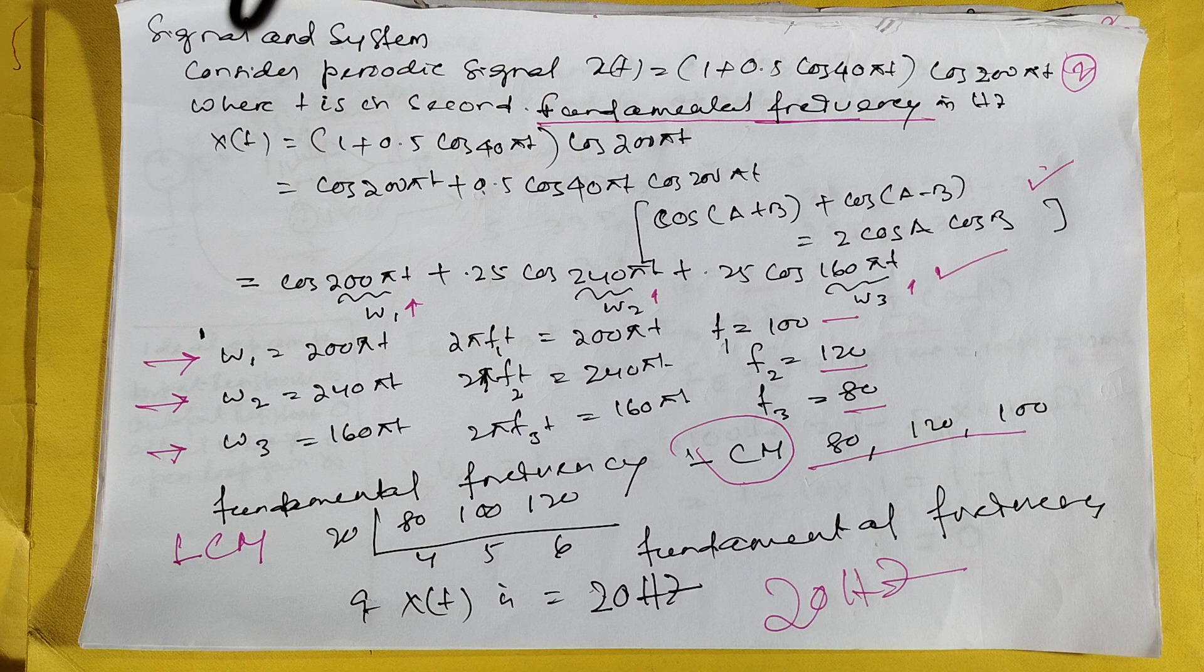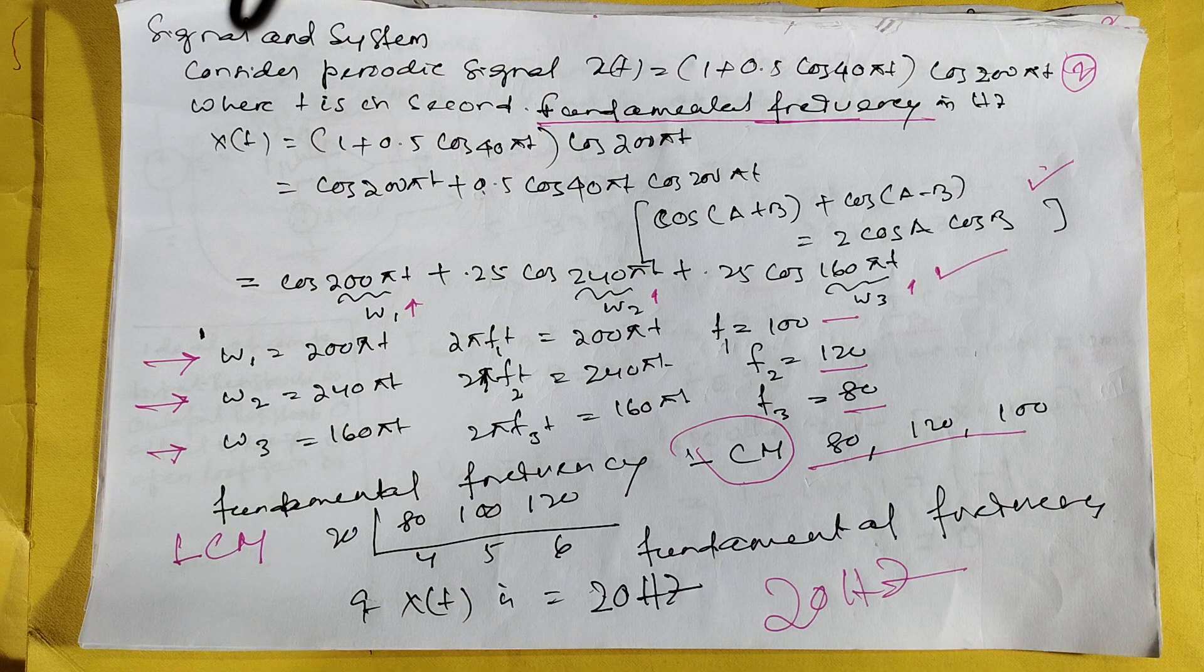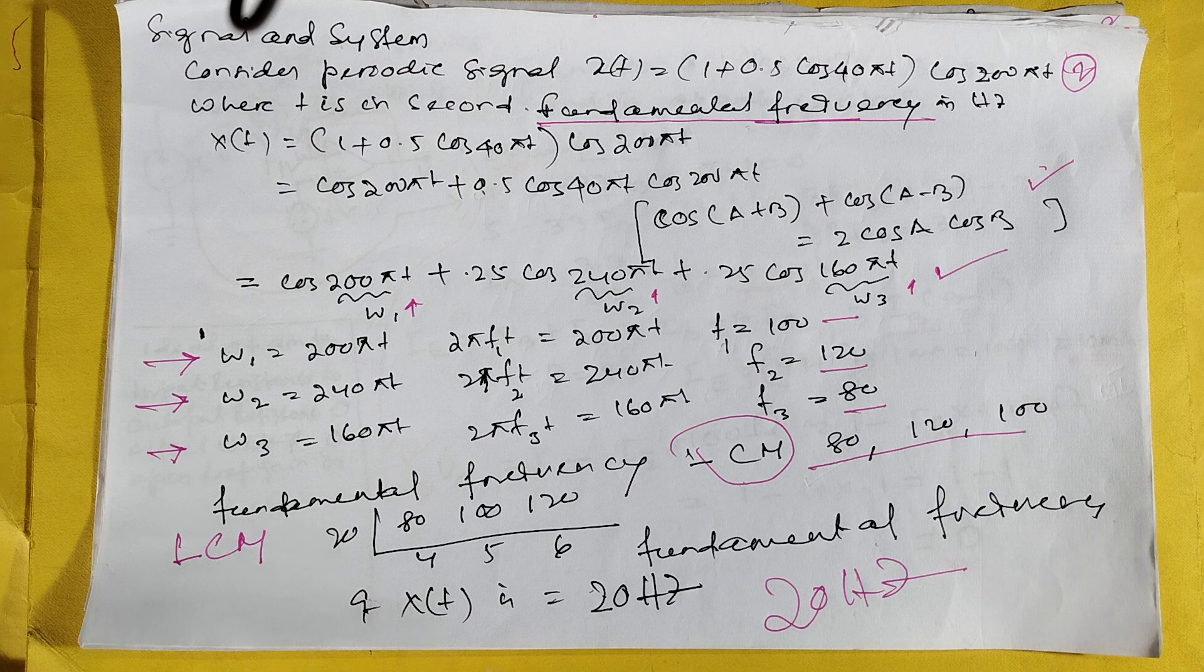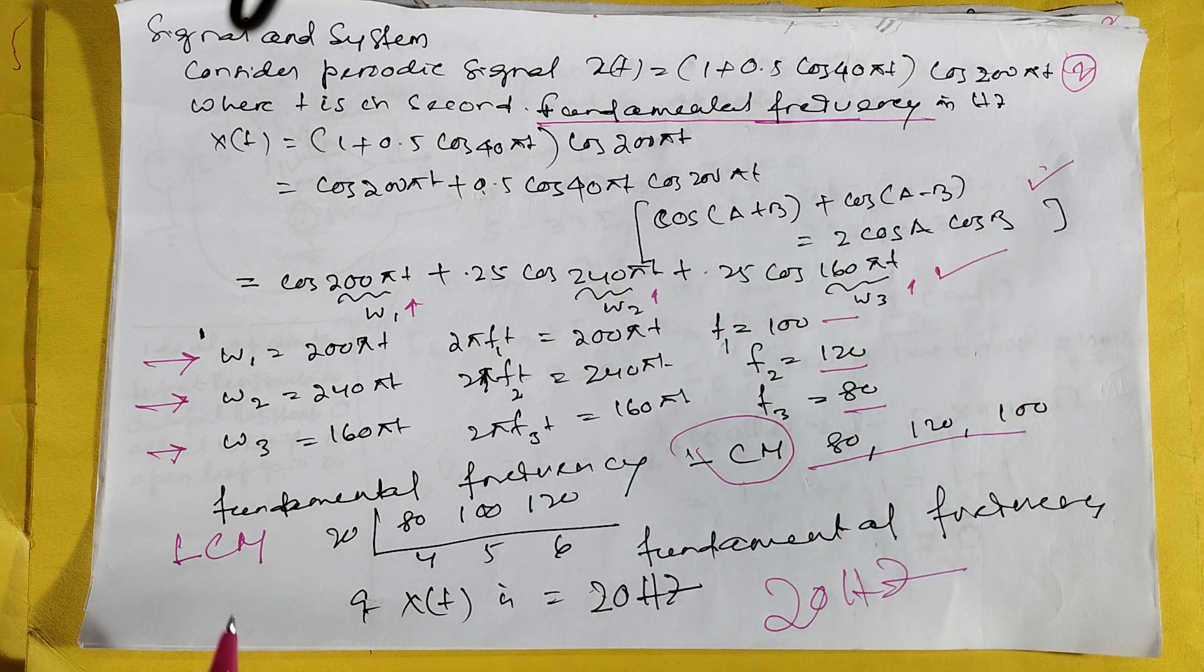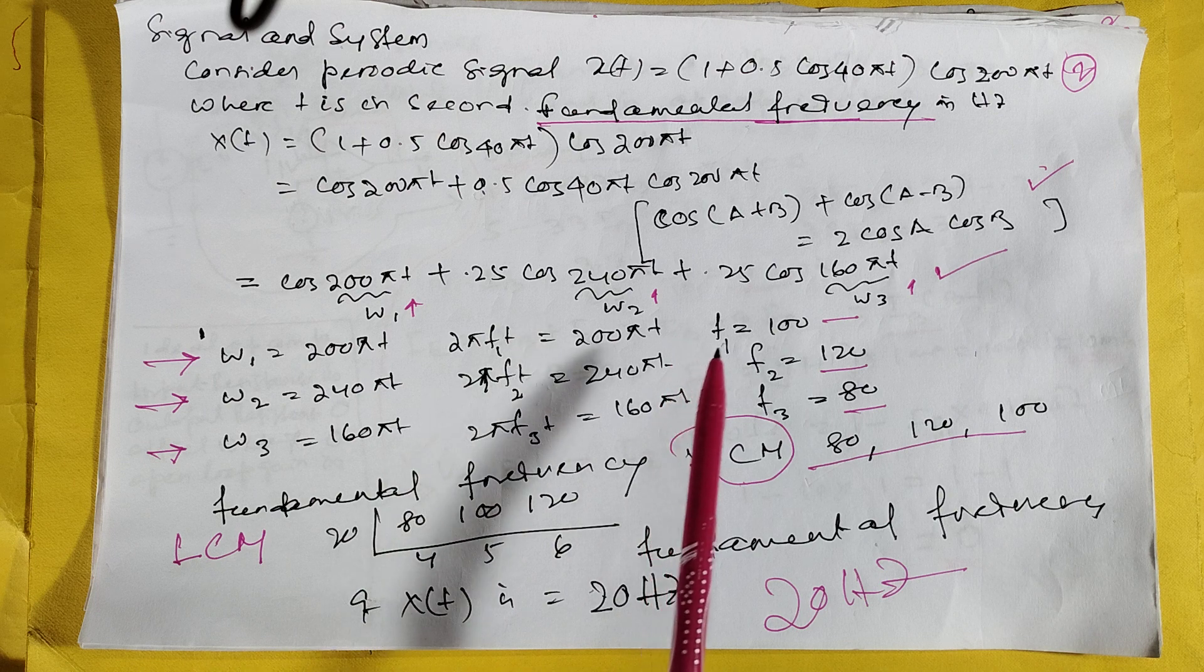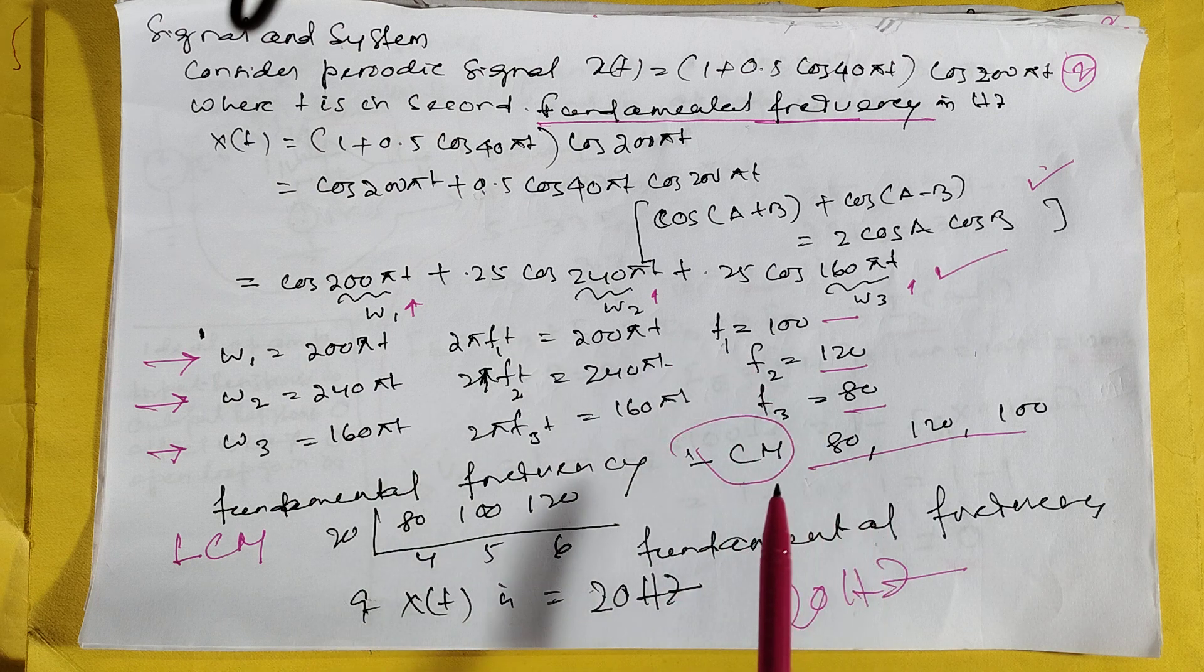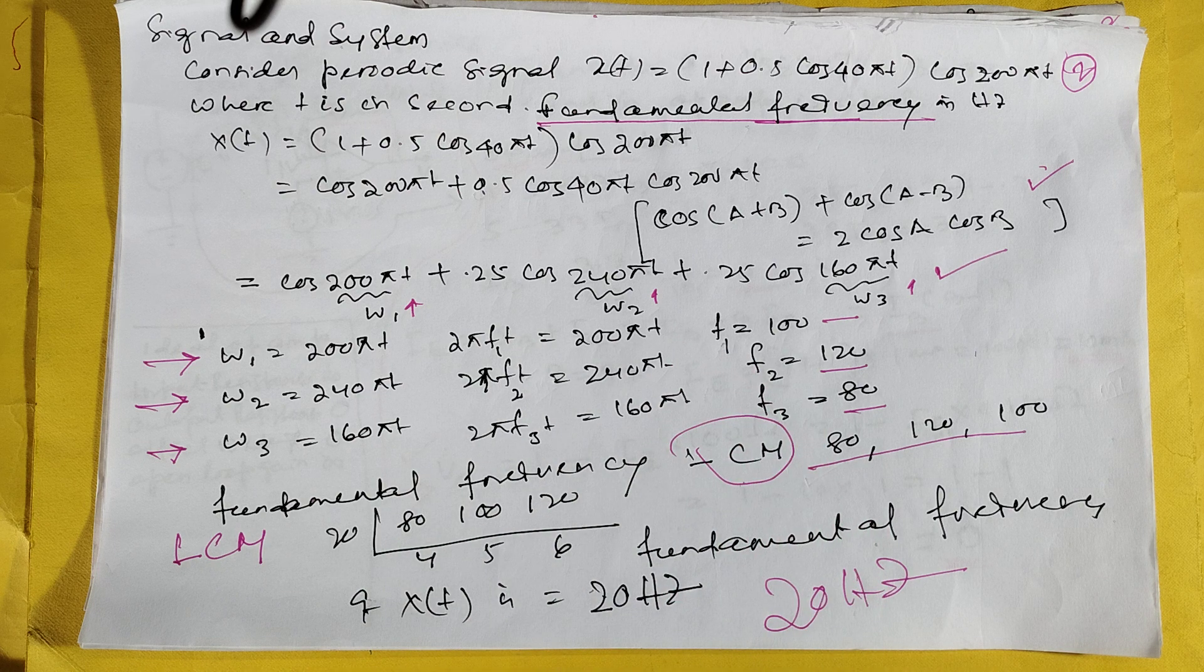Here, signal and system. There is a periodic signal. Change here like this to cos A plus B, cos A minus B. After that, three frequencies are coming: 100, 120, 180, 100, 120, 80. LCM is coming 20 hertz.